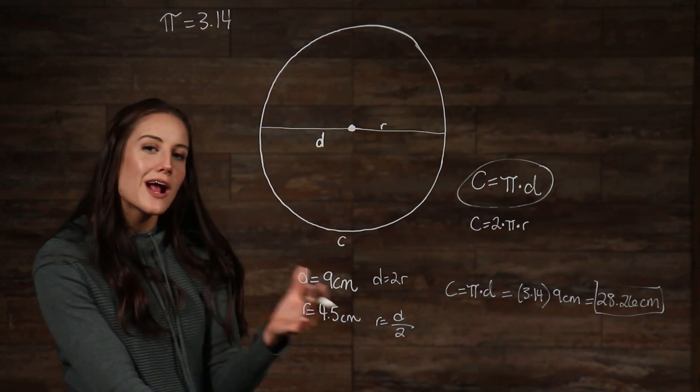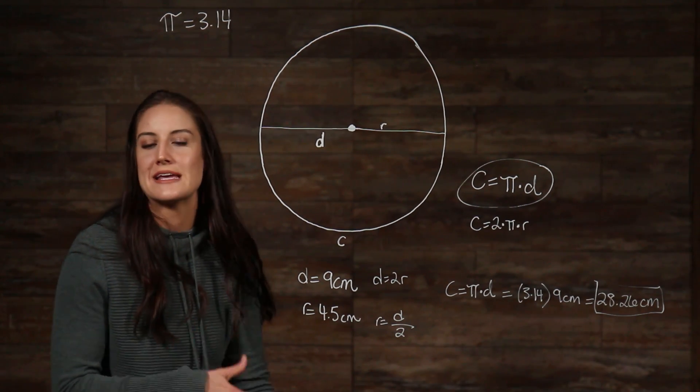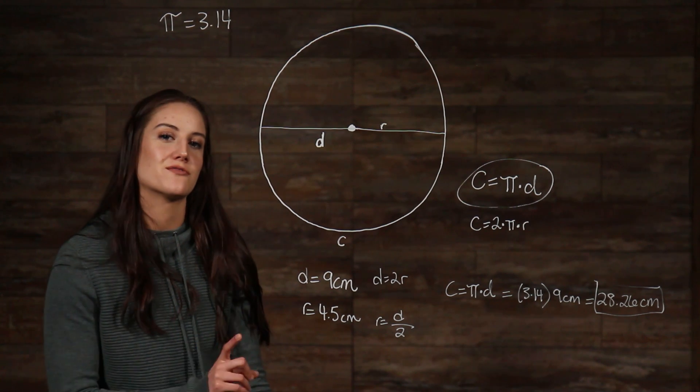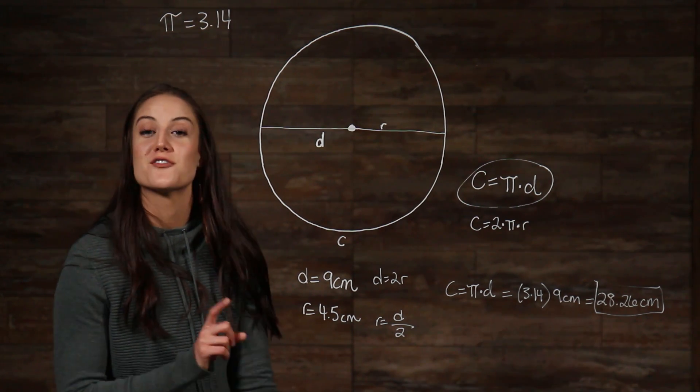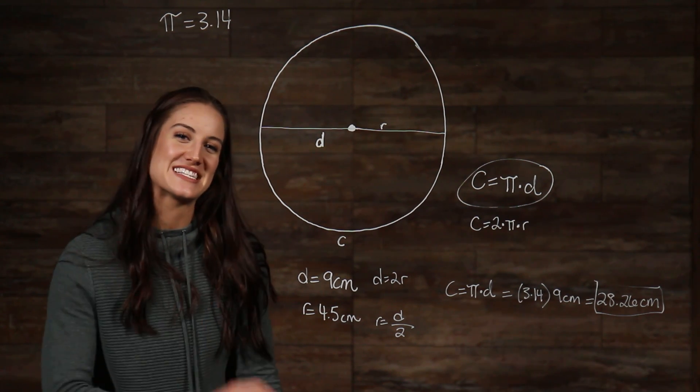Now, to practice, try drawing a circle on a piece of paper and measure your diameter with a ruler. Then find your radius and circumference. I hope that this video has been helpful for you. For further help, be sure to subscribe to our channel by clicking below. See you guys next time!